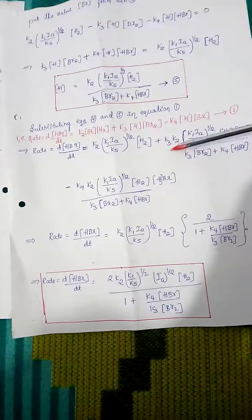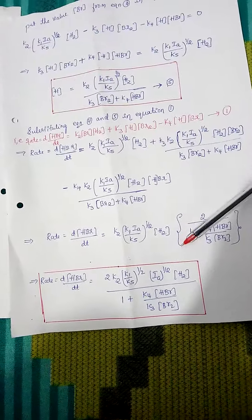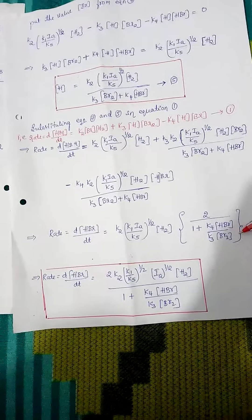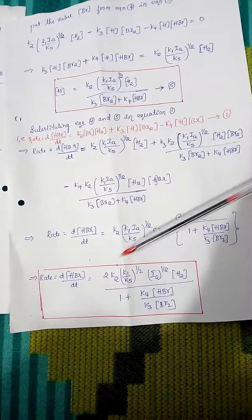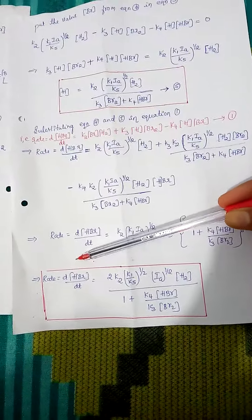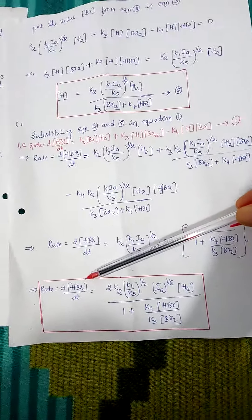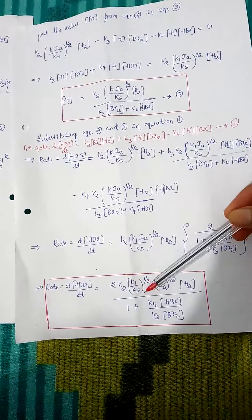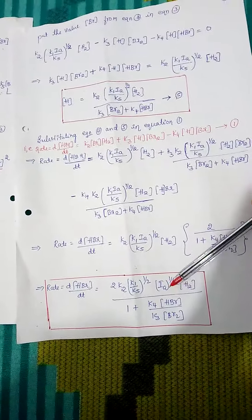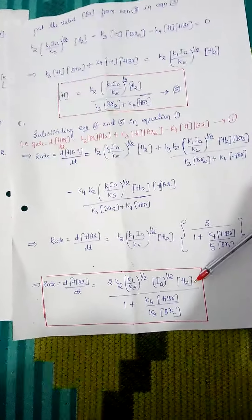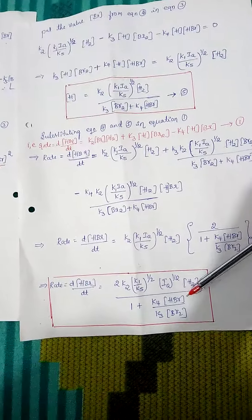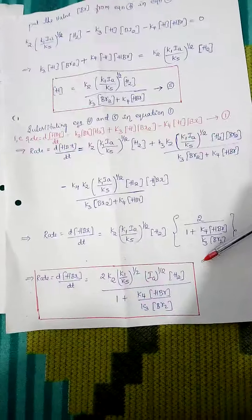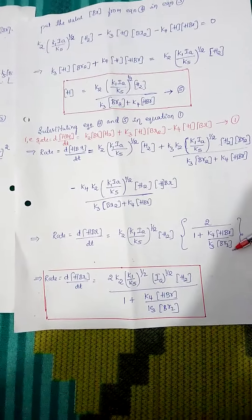After equating and simplifying, the final reaction kinetics equation for the formation of hydrogen bromide is: d[HBr]/dt = 2·K2·(K1/K5)^(1/2)·Ia^(1/2)·[H2] / (1 + K4·[HBr] / K3·[Br2]). This final equation represents the reaction kinetics for the formation of hydrogen bromide. Thanks for watching.